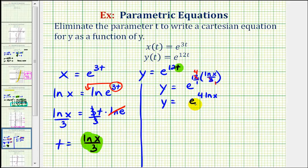We can use the power property of logarithms again and take the coefficient of four and move it to the exponent on the x. So we have y equals e raised to the power of natural log x to the fourth.